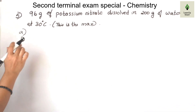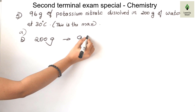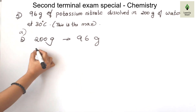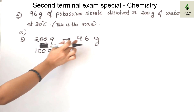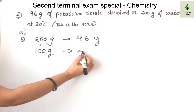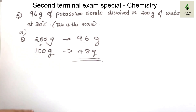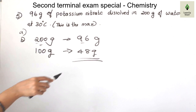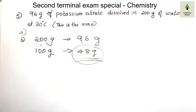How do we explain it? 96 grams of potassium nitrate is dissolved in 200 grams of water. For solubility, we calculate per 100 grams of solvent. Simple mathematics: 96 divided by 200, multiplied by 100 — that gives 48 grams. We will solve 96 grams in 200 grams divided by 100 grams. The solubility of potassium nitrate is 48 grams per 100 grams of water.